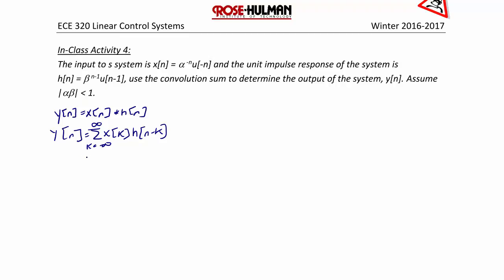So y[n] is equal to the summation from k = −∞ to +∞ of α^(−k) · u[−k] times β^(n−k−1) · u[n−k−1].